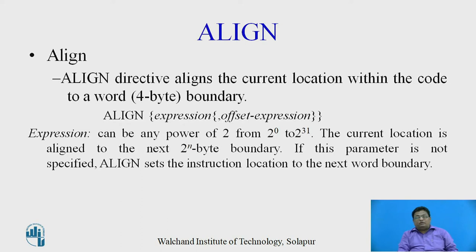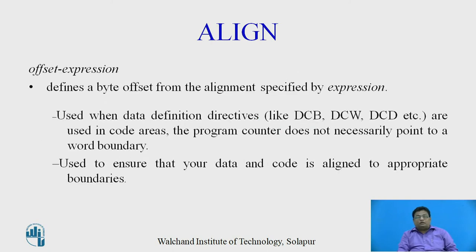The next directive is the ALIGN directive. The ALIGN directive aligns the current location within the code to a word boundary, meaning a 4-byte boundary. The general syntax is: ALIGN expression, offset expression, where expression can be any power of 2 from 2^0 to 2^31. The current location is aligned to the next 2^n byte boundary. If this parameter is not specified, then the ALIGN directive sets the instruction location to the next word boundary. The offset expression defines a byte offset from the alignment specified by the expression.